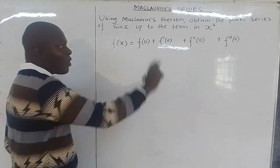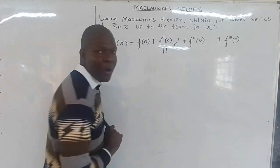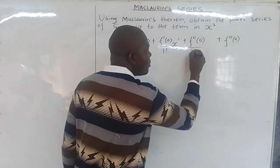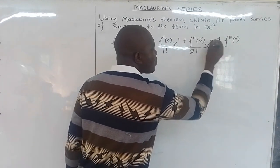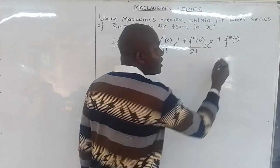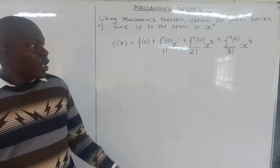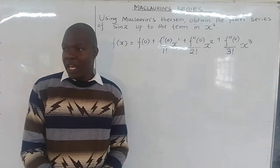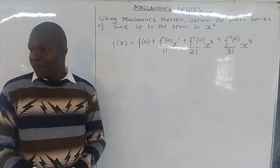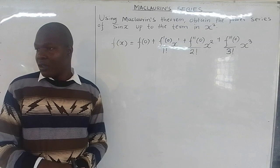When you differentiate once, it is over 1 factorial and x is raised to power 1. When you differentiate twice, it is over 2 factorial and x is raised to power 2. When you differentiate a third time, it is over 3 factorial and x is raised to power 3. So you read the term in x cubed. You start from f(0) and continue differentiating until you reach the required term.